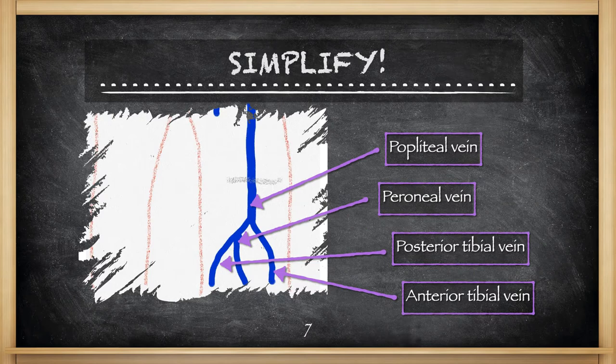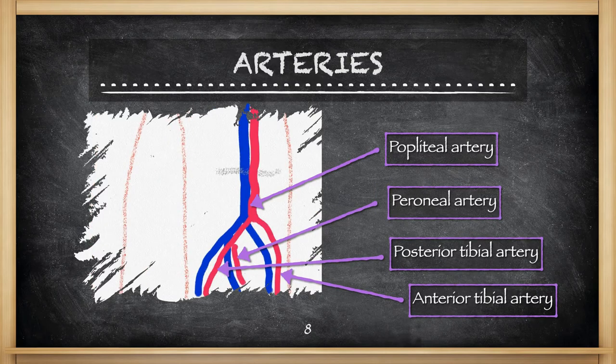As you migrate down the leg, you will run into the popliteal vein, peroneal, posterior tibial, and anterior tibial veins. When you pair those with the arteries, you find the popliteal, peroneal, posterior tibial, and anterior tibial arteries.